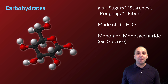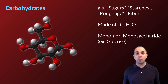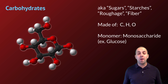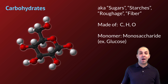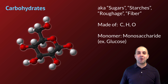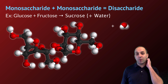Carbohydrates, also known as sugars, starch, or fiber, are biological molecules made out of carbon, hydrogen, and oxygen, typically represented in a ring structure. That ring is an example of a monomer. Most biological macromolecules exist as monomers and polymers. This particular carbohydrate monomer — a monosaccharide — is glucose, a very common six-carbon sugar.